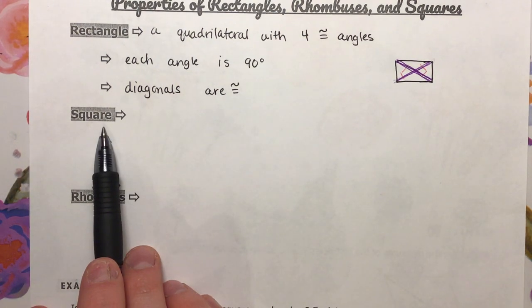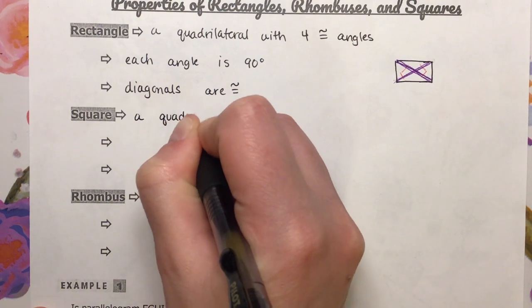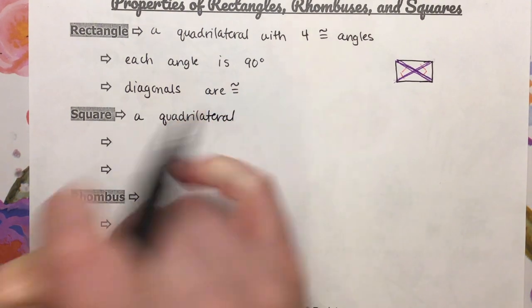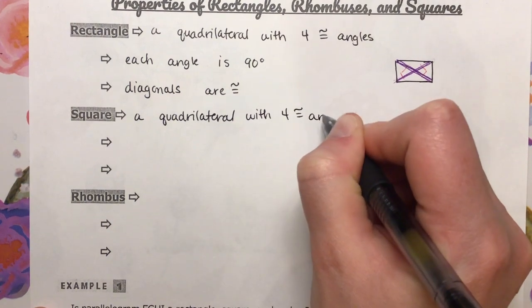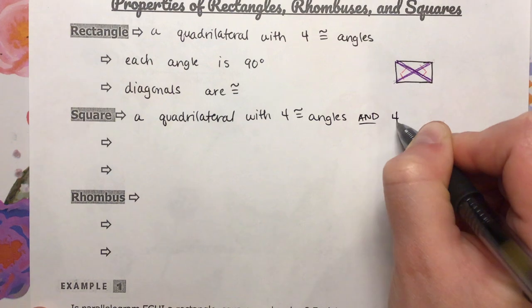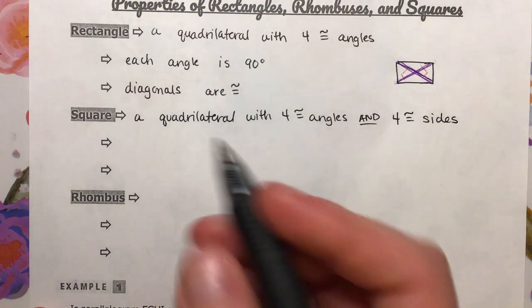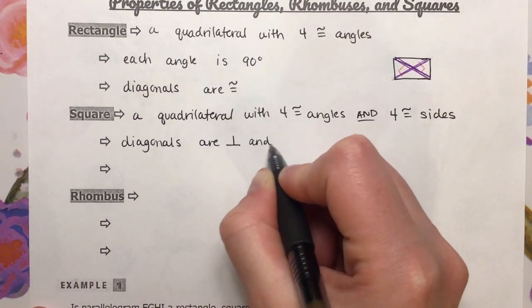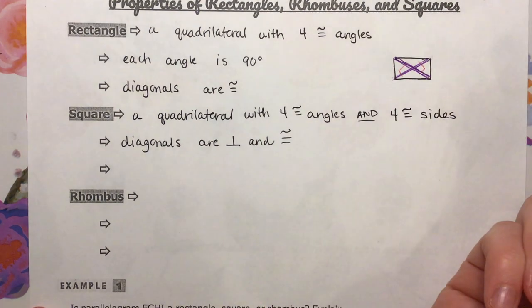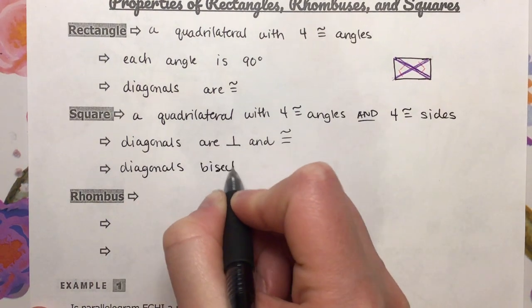Next we have a square. A square is a quadrilateral with four congruent angles and four congruent sides. Remember, quadrilateral just means a shape with four sides, a polygon with four sides. Now, this has a couple of special properties because it's a square as well. For example, diagonals are perpendicular, and they are congruent. Also, diagonals bisect opposite angles.